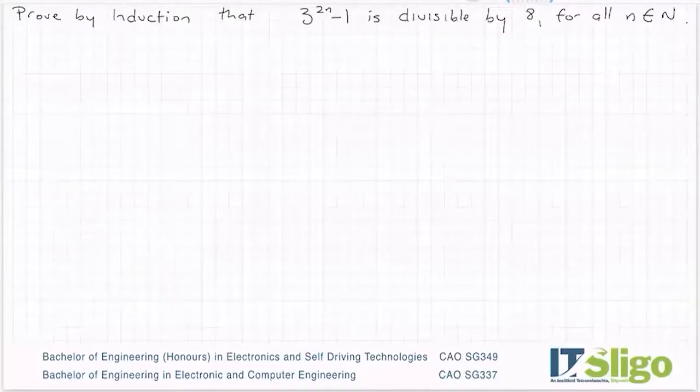Prove by induction that 3^(2n) - 1 is divisible by 8 for all n ∈ N. The divisibility ones don't come up too often, so I got this one from a book.